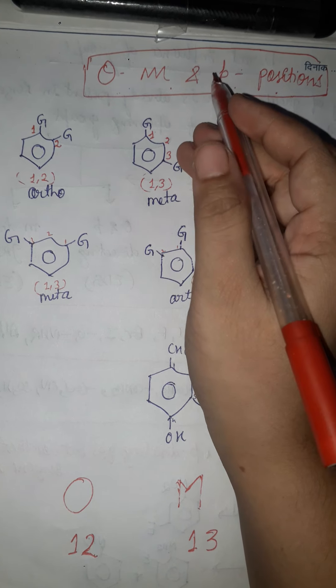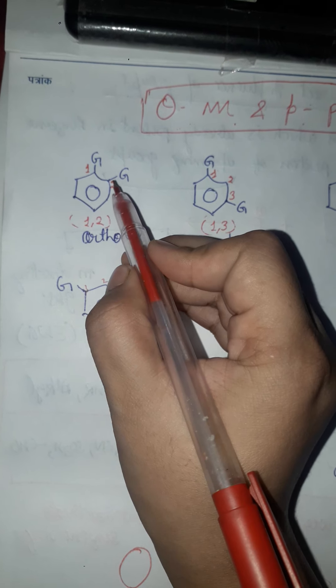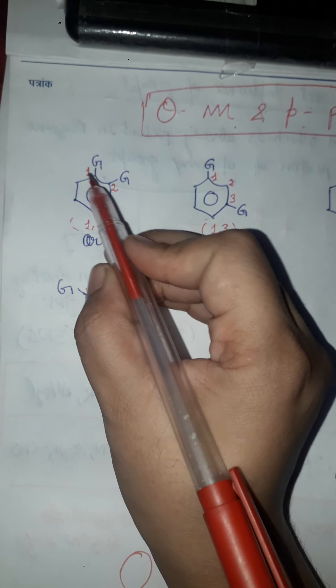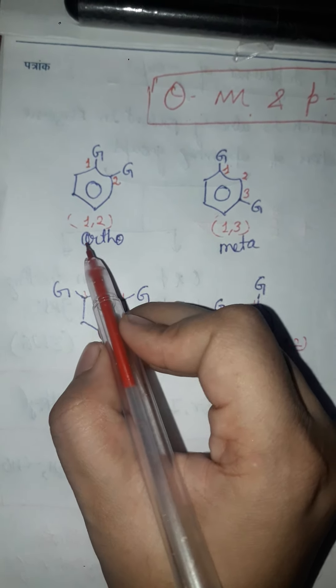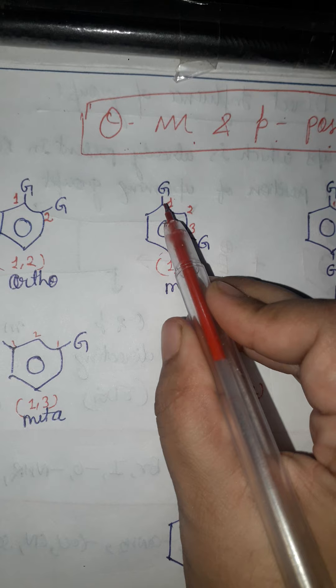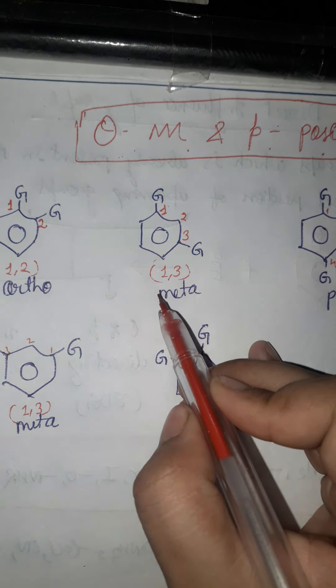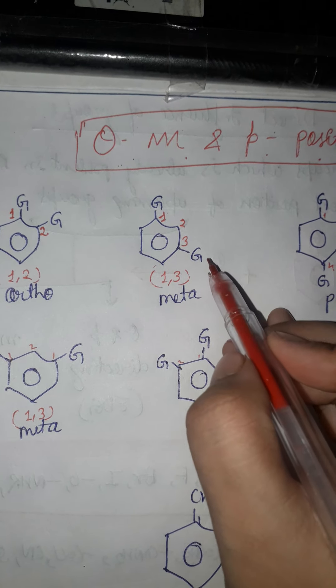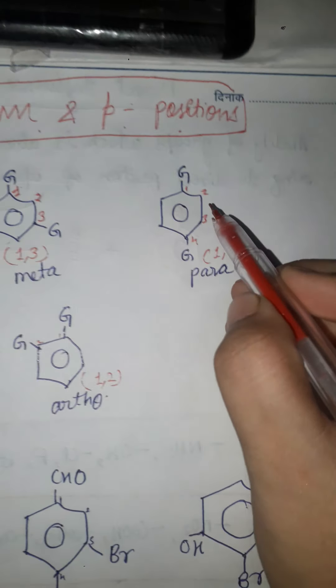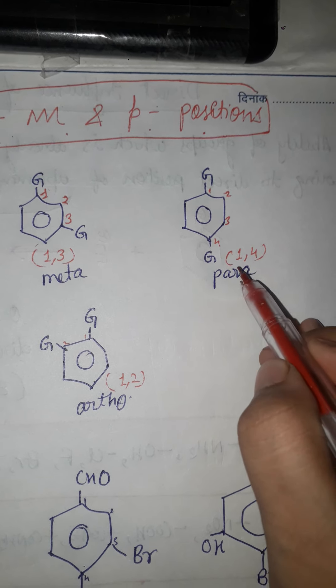Firstly, suppose that this is your benzene ring. In the benzene ring, if any groups are found on certain positions, you have to count the numbers. Position number one and two — if any groups are found at position one and two, that position is called the ortho position. If groups are found at position number one and three, those groups are called meta groups.